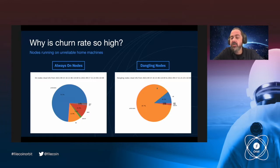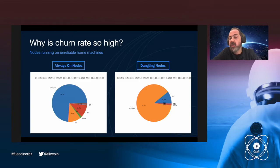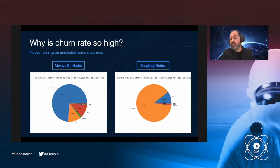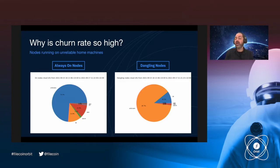For dangling nodes, this increases further — nearly 88% are on non-well-known cloud infrastructure. This gives us solid grounding to say the churn rate can be attributed to unreliable home machines, though we still have ongoing experiments to find out more.